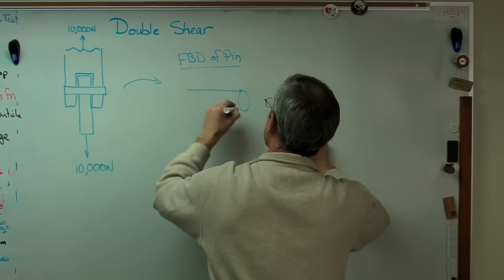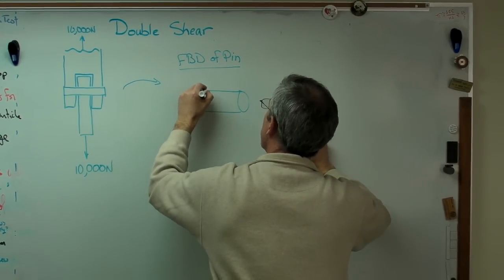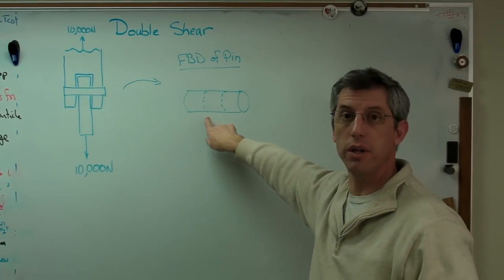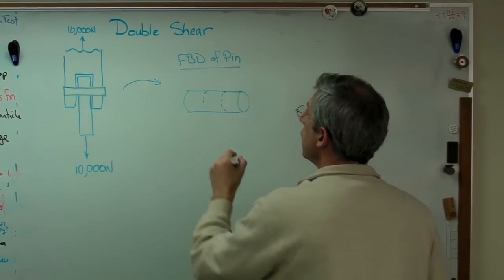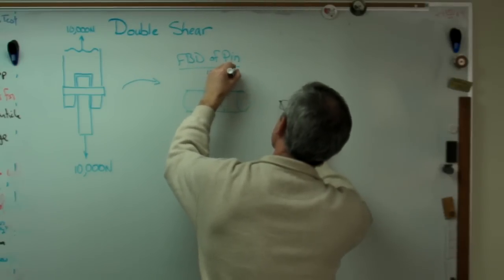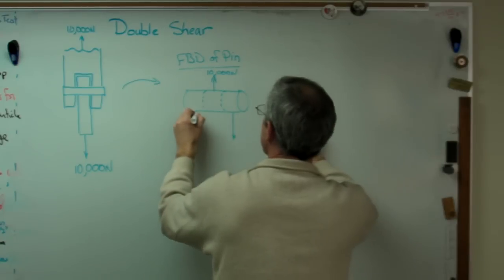Okay, let's see if I can draw this in quasi-3D. Okay, shear plane number one, shear plane number two. The force up is 10,000 newtons. The force down is 10,000 newtons. But it's divided up into two separate forces of 5,000 newtons each. Therefore,